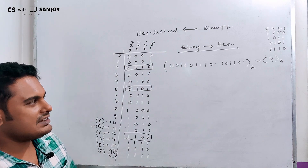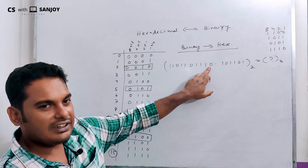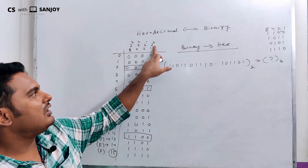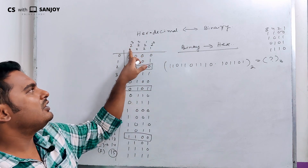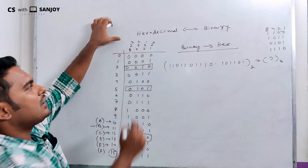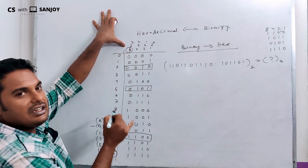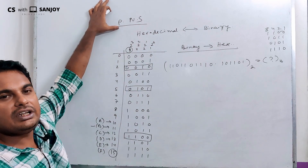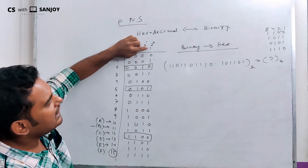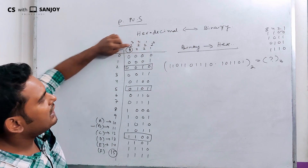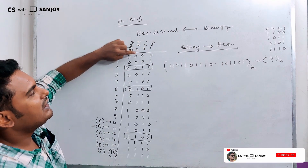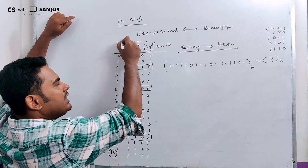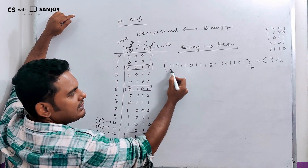We already know LSB and MSB. LSB is the least significant bit. MSB is the most significant bit. The positional value of LSB is 1 and the positional value of MSB is 8. This is a positional number system, and it is a weighted number system.